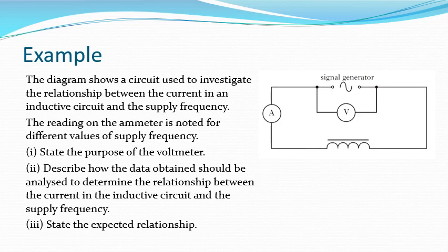Sometimes you can be asked about an experiment to show the relationship between the frequency and the inductive reactance, or the frequency and the current through an inductor. The circuit uses a signal generator — an AC supply whose frequency we can change — along with an ammeter, an inductor with an iron core, and a voltmeter connected across the signal generator. We change the frequency, measure the current, then adjust the frequency across a range of values, repeating as necessary to make the experiment more reliable.